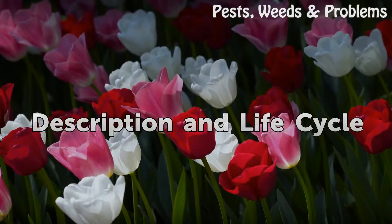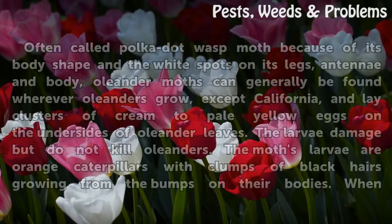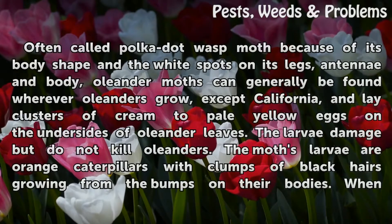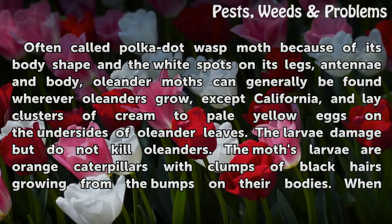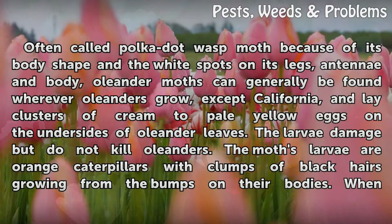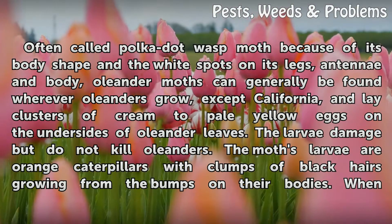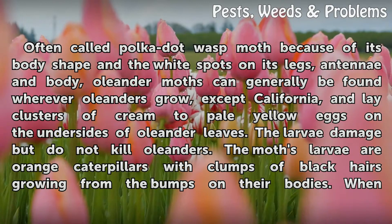Description and Life Cycle. Often called polka dot wasp moth because of its body shape and the white spots on its legs, antennae and body, Oleander Moths can generally be found wherever Oleanders grow, except California, and lay clusters of cream to pale yellow eggs on the undersides of Oleander leaves.